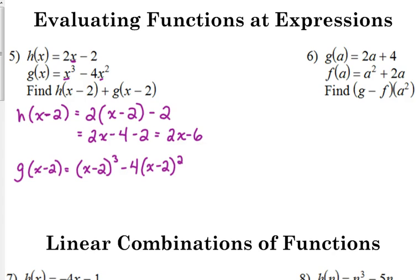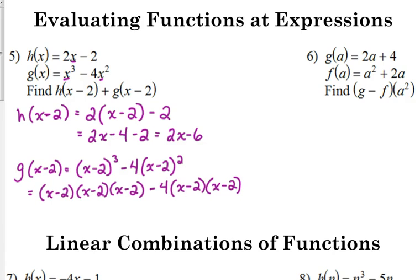X minus 2 cubed is not X cubed minus 8. Remember, we've got to write it three times and multiply it out. So that's X minus 2 times X minus 2 times X minus 2, and I'm going to write it all out first. Then X minus 2 times X minus 2 is X squared minus 4X plus 4 — I went ahead and did the simplifying.